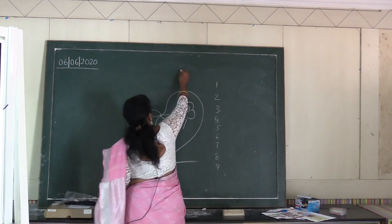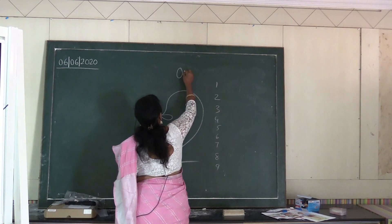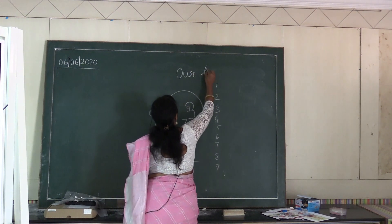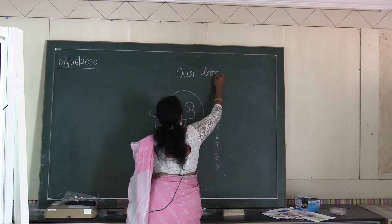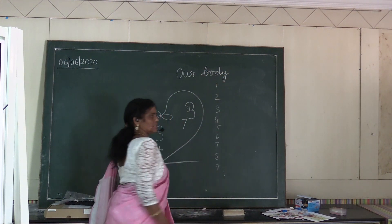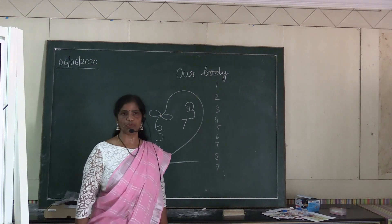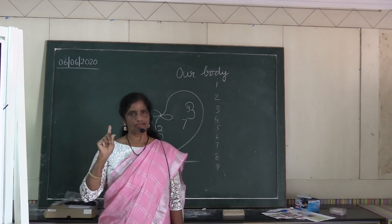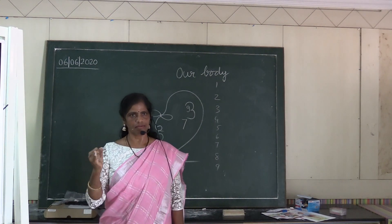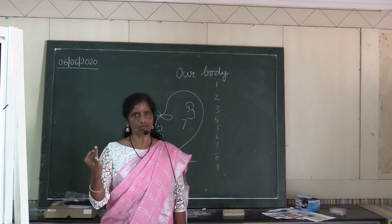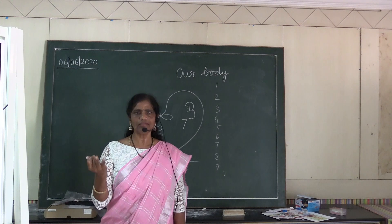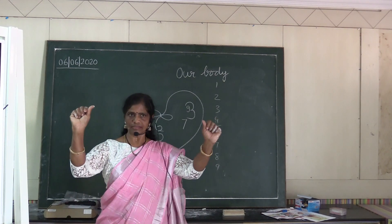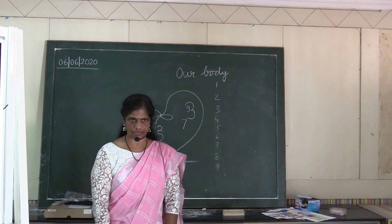Today we are going to learn about our body. Our body is divided into 3 main parts: the head, the trunk, and the limbs. What do you mean limbs? Hands and legs.